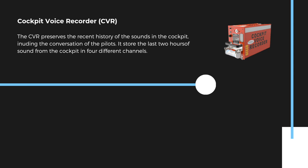The CVR preserves the recent history of the sound in the cockpit, including the conversations of the pilots. It stores the last two hours of sound from the cockpit in four different channels.